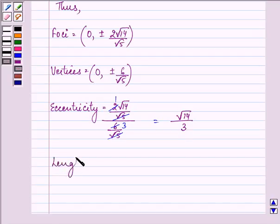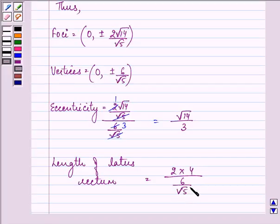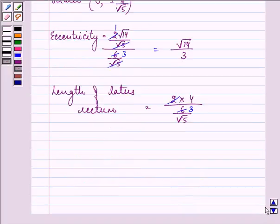And lastly, the length of latus rectum. That is 2b²/a. That is known to us as 4 divided by 6/√5. Let us simplify it. And on doing so, we have the value of it as 4√5/3.